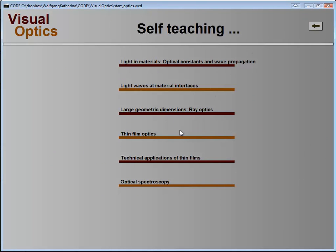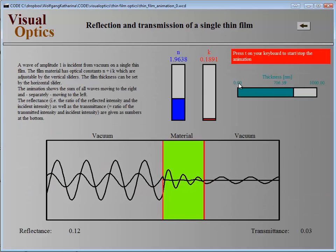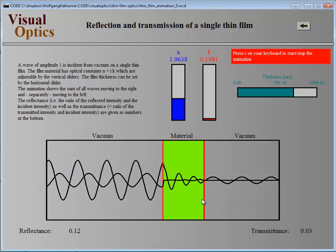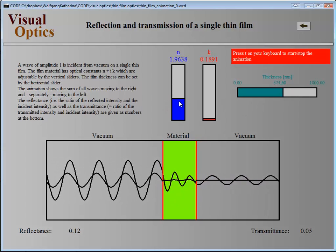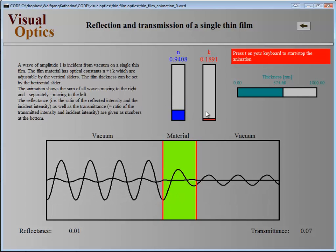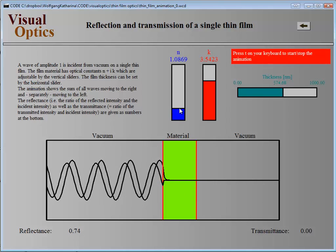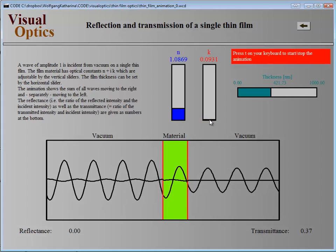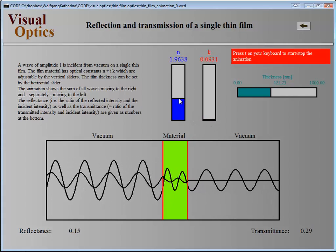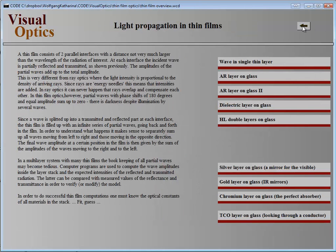Once you have that, you can go to thin film optics and see how waves propagate through thin films. This is a single thin film layer where you can change the thickness. You can change the refractive index values and see how a metallic layer would work, how a transparent layer of an oxide or nitride would work. This is all very easy to understand.